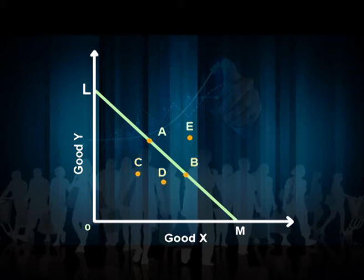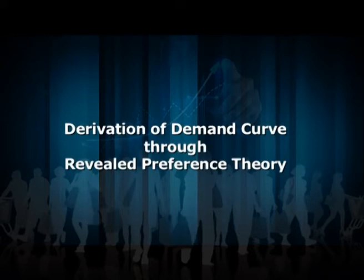We can also describe this behavior as the strong axiom of revealed preference, where the consumer prefers A over B, and B over C and D — showing a proper strong order. In weak ordering, the consumer can be indifferent between bundles A and B. Now let us understand the derivation of the demand curve through revealed preference theory. Professor Samuelson propounded the law of demand based on the revealed preference hypothesis, on the basis of some assumptions.